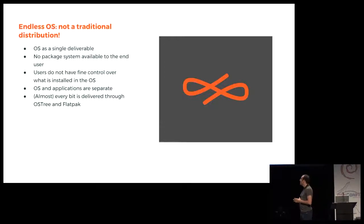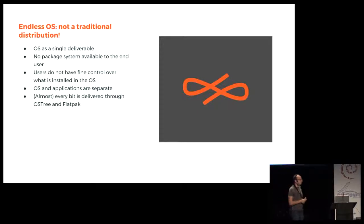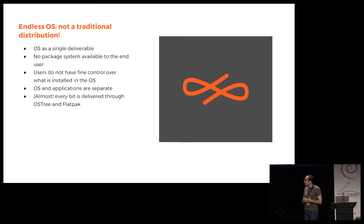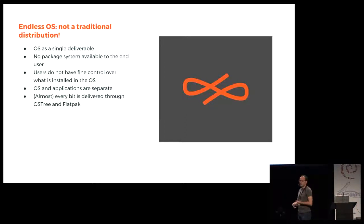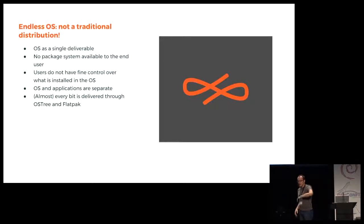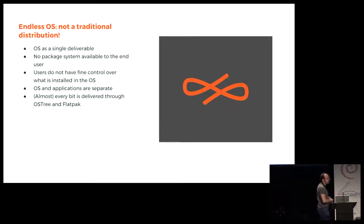OS and applications are separate. The applications are managed through Flatpak and the operating system is managed with OSTree. These two things have really no relation to each other — they're just different layers. The OS can update independently of the applications, independently of the runtimes that the applications use.